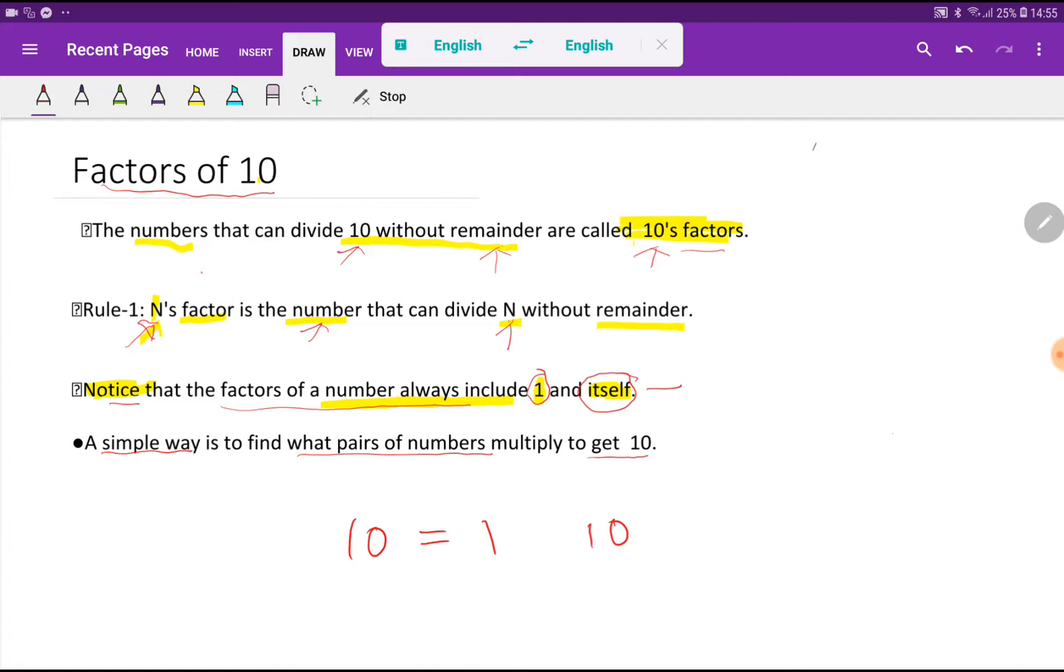Here is the process. A simple way is to find what pairs of numbers multiply to get 10. So if I multiply 1 times 10, then I will get 10. So 1 and 10 are the factors of 10.